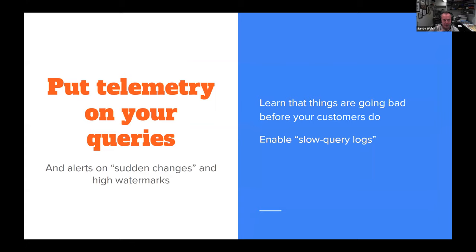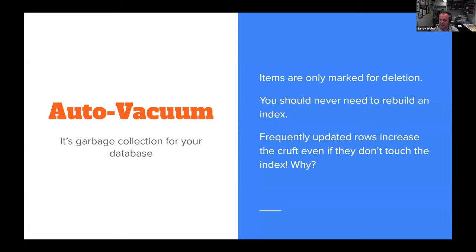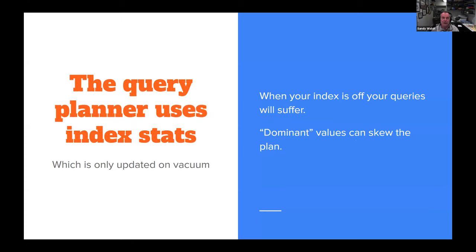Put telemetry on all your queries. Most databases have a slow query log — enable it, get alerts on it, find out when you've hit some new level in your access. This is a Postgres-specific thing, but Postgres does cleanup of the database — it basically writes everything in and then, like garbage collection, goes in and cleans up. Turn on auto vacuum and make that happen all the time. The query planner uses the index statistics to come up with a better plan, so if you're not vacuuming and not keeping your index fresh, your queries will suffer because the database can't use all those wonderful hints it has gleaned.